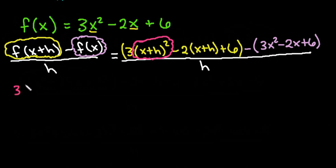I would keep the 3 on the outside for now. I'm going to square the first term, which would give me x squared. Remember that this is really x plus h times x plus h. So I have to distribute the x to the h, and I will have two of those. So don't forget the middle term on this one. Plus h squared.